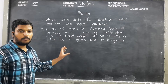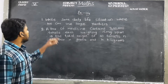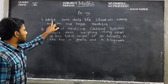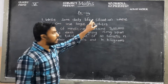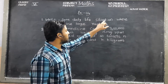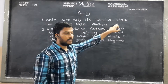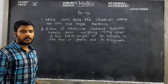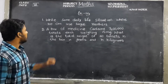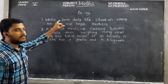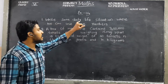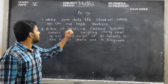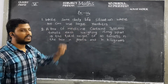In Exercise 1.4, the first sum is: write some daily life situations where we can use large numbers. What is it? Write some daily life situations where we can use large numbers.